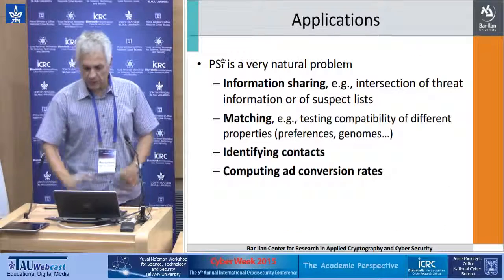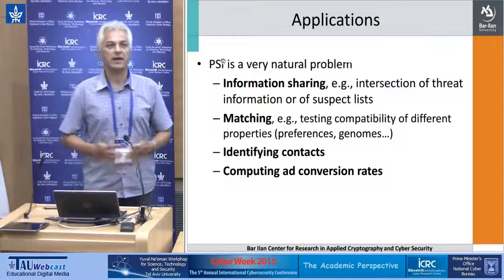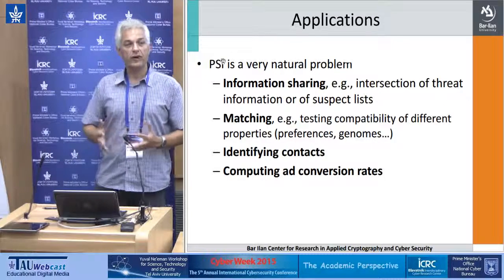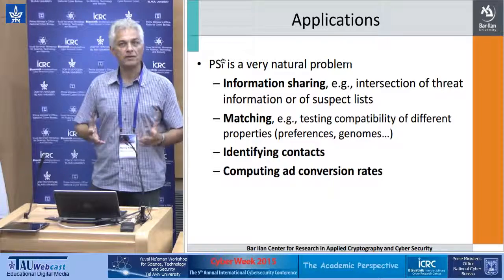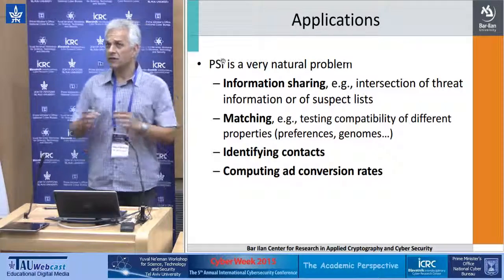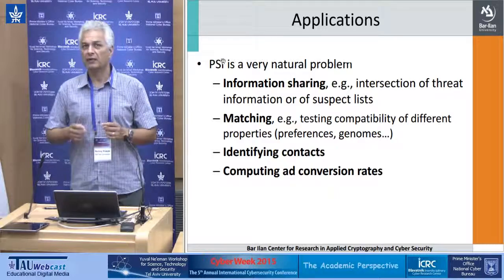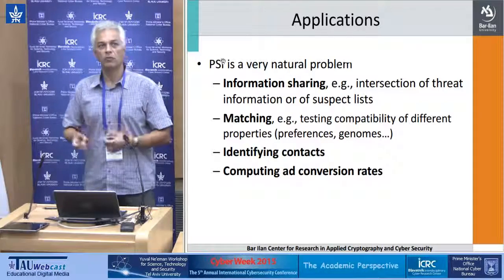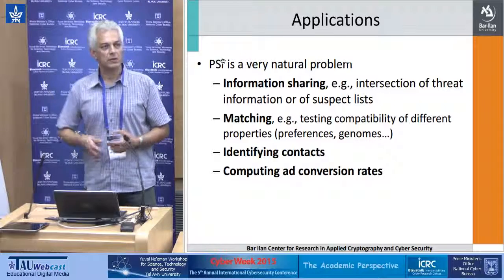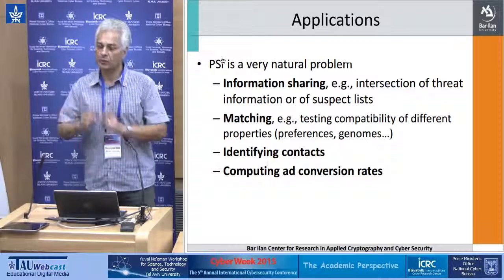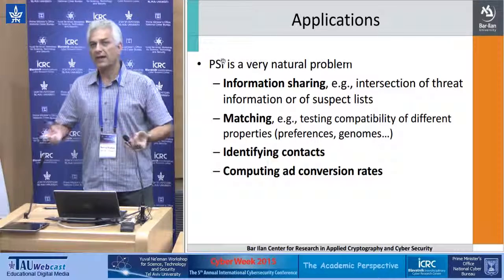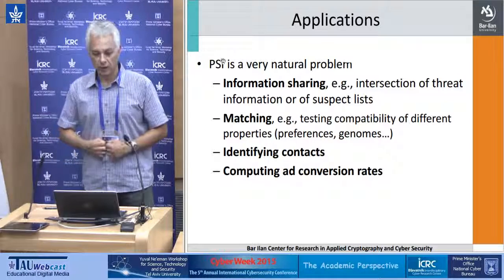Why is this problem interesting? It's relevant in many domains. For instance, for information sharing: suppose two parties are companies that have some threat data, and they want to check if the same threat applies to both of them — they receive pings from the same addresses or something of that sort. Each one of them has a huge list, and they want to compare the intersection of the lists. It could be any other type of information they want to share.